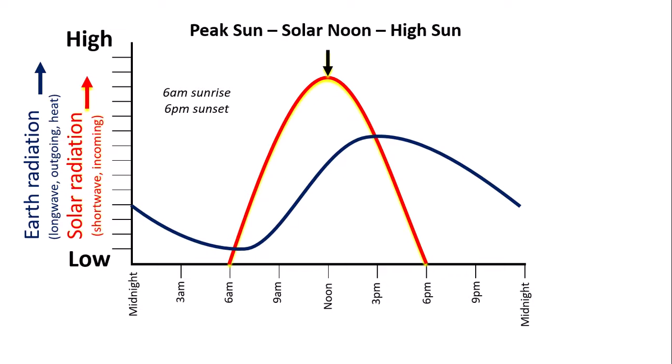When on average would we find the lowest or the minimum temperature? It would actually be just after sunrise. In this case, about 6:10 or 6:15 a.m. is when the lowest temperature we should expect. Why is it just after sunrise? It's because there's a little bit of a lag.